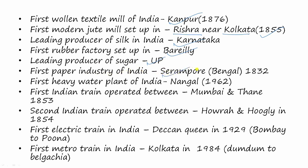The first paper industry of India was established in Serampore in Bengal in 1832. The first heavy water plant in India was established in Nangal in 1962. The first Indian train was operated between Mumbai and Thane in 1853, and the second Indian train was operated between Howrah and Hooghly in 1854. The first electric train in India is the Deccan Queen.